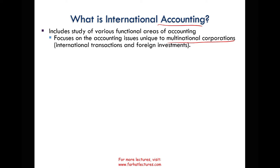If you want to summarize international accounting, we have to deal with two things: international transactions and foreign investments. Those two topics have many subtopics, but this is basically what it is. It's either you buy and sell in the international market, or you might also have direct foreign investments where you take your money and either start an operation or buy an existing company in a foreign country.